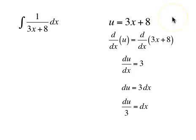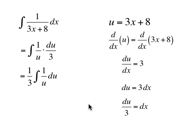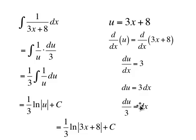3x plus 8 becomes u, so this problem is now the antiderivative of 1 over u times du over 3. du over 3 is really 1/3 times du — a constant that comes out in front of the integral sign. So we get 1/3 times the integral of 1 over u du. We know the derivative of the natural log of x is 1 over x, so the integral of 1 over u is the natural log of the absolute value of u plus c. Since u is 3x plus 8, our final answer is 1/3 times the natural log of the absolute value of 3x plus 8 plus c.